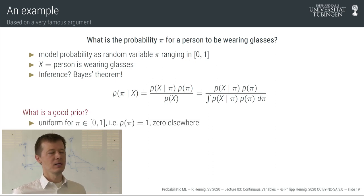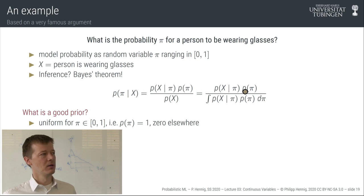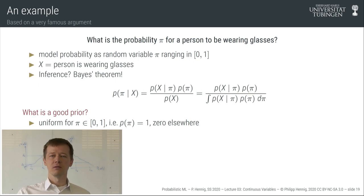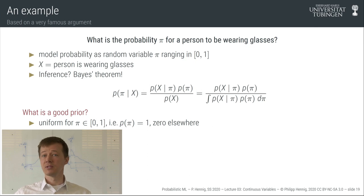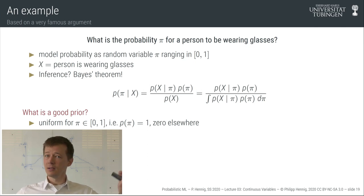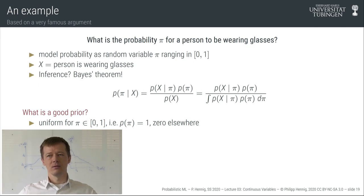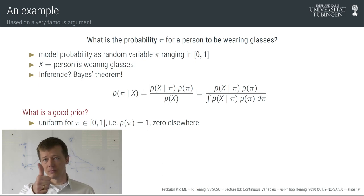For the prior, I'll assign a uniform prior: pi ranges from 0 to 1, and we say every number in that domain is equally probable if we know nothing yet. This is a flat distribution. It works because it's a bounded domain and the integral from 0 to 1 of the function 1 is just 1. Now the tricky bit: what is the likelihood? What's the probability of observing someone wearing glasses if the true probability of wearing glasses is pi?